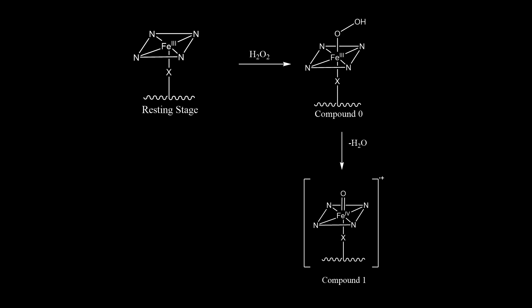A single electron process takes place to give compound two, which is an uncharged iron in plus four oxidation state. Another single electron transfer then takes place along with water loss to regenerate the active site in its resting stage.